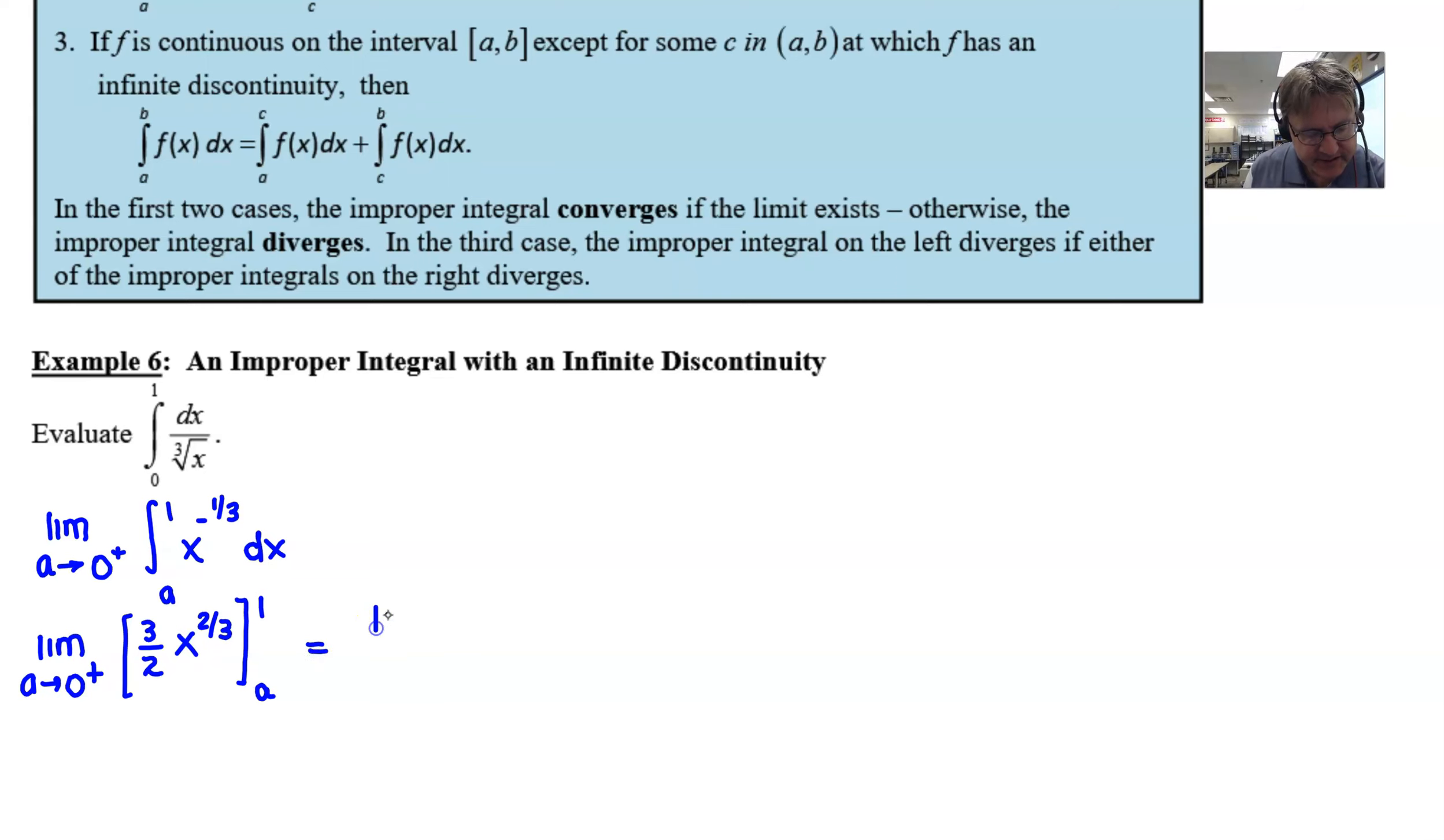What this would lead us to do is still holding off on that limit, not quite ready for him yet. But we can plug in one for our x. If we take one to the two thirds power, we still will get the one. And then, of course, if we take A to the two thirds power, we are certainly going to get A to the two thirds.